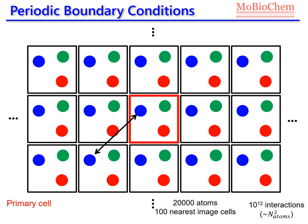For this reason, we don't consider the 100 nearest image cells to compute interaction energies, but what we do is to define a cutoff, and we compute the interactions only with the atoms which are inside this cutoff.